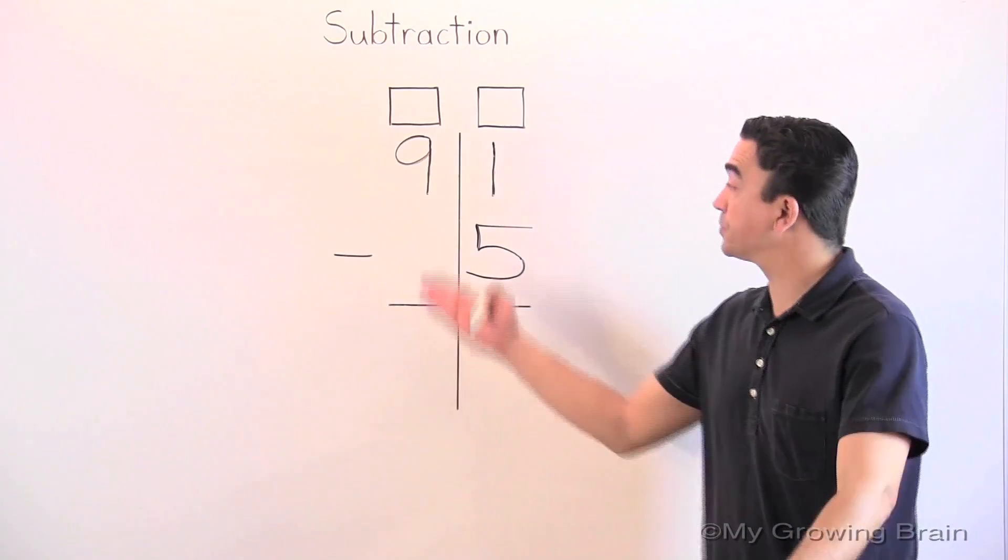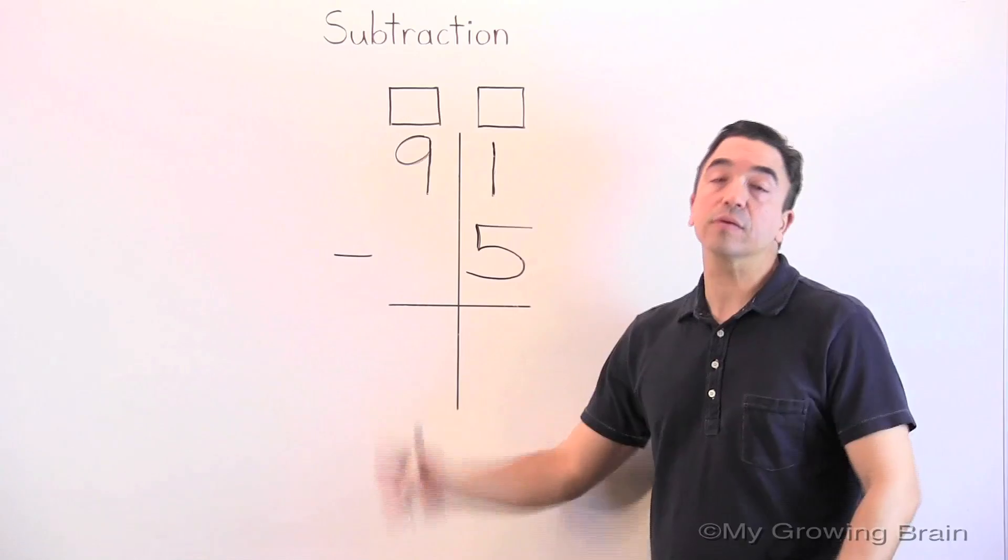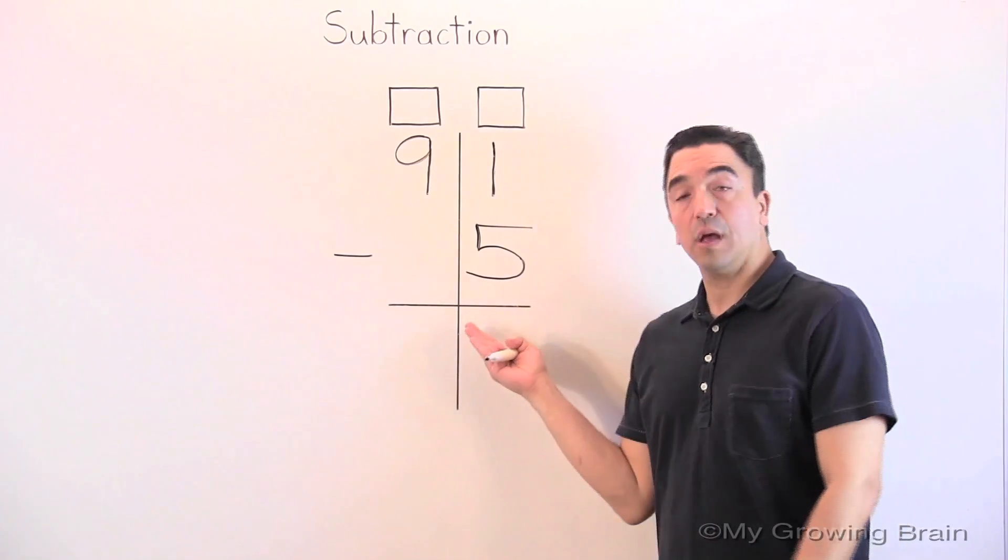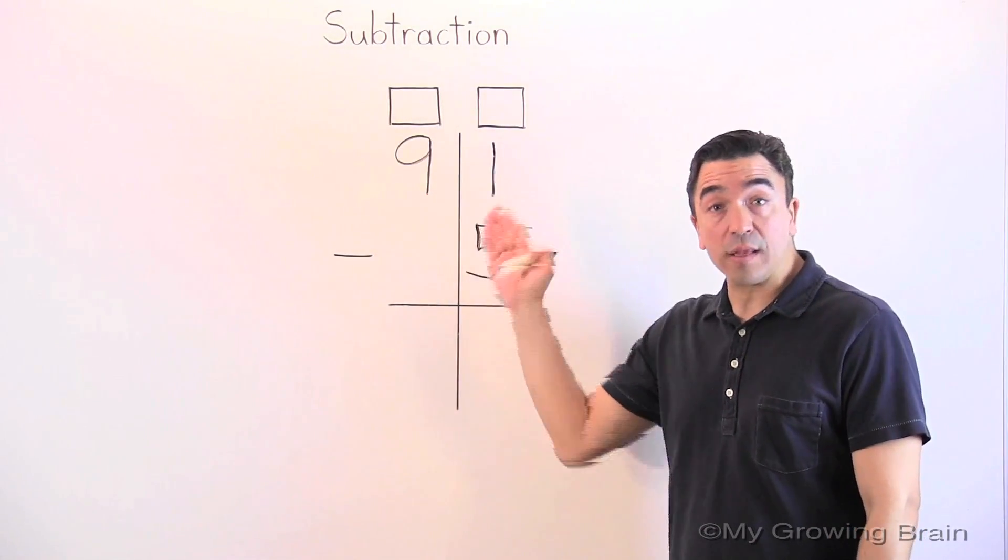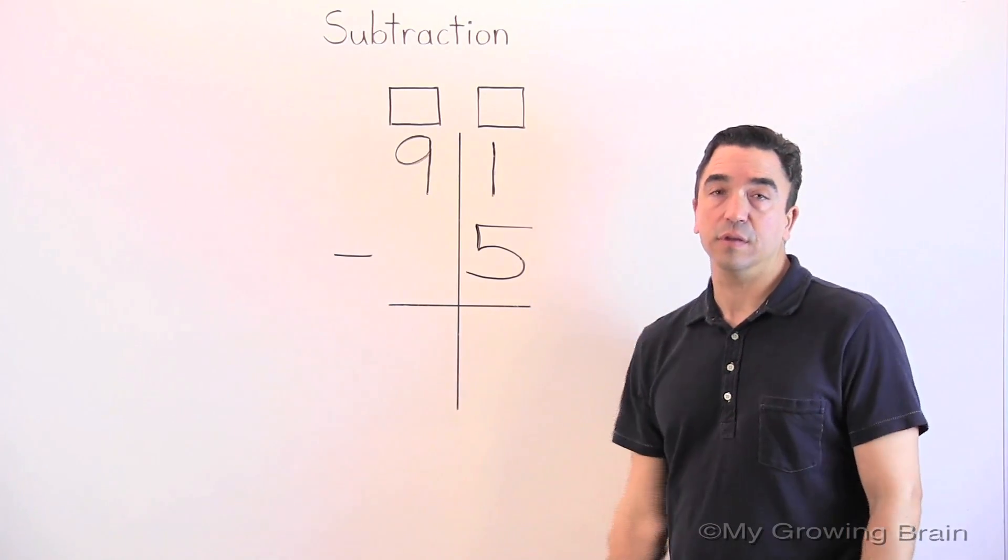Here's our problem. A two-digit number subtract or minus a one-digit number. 91 minus 5.